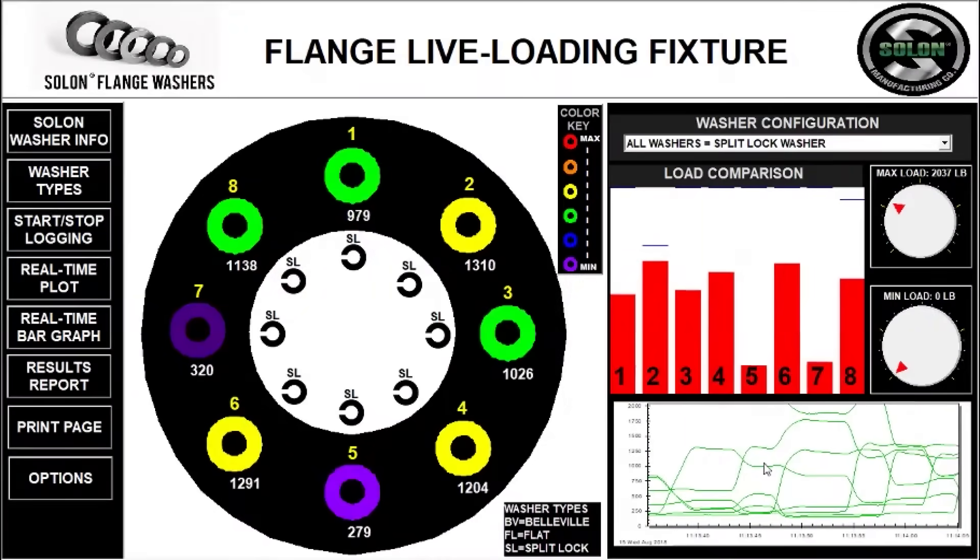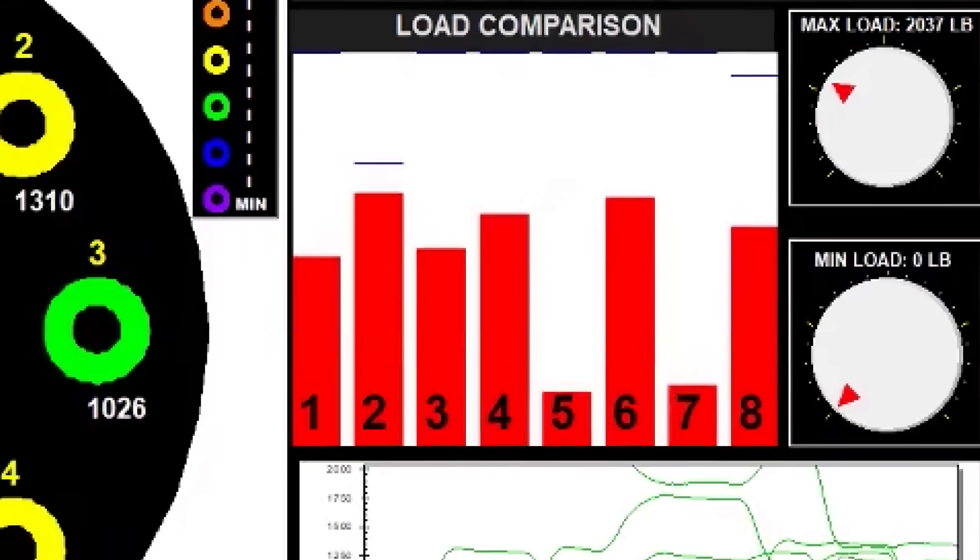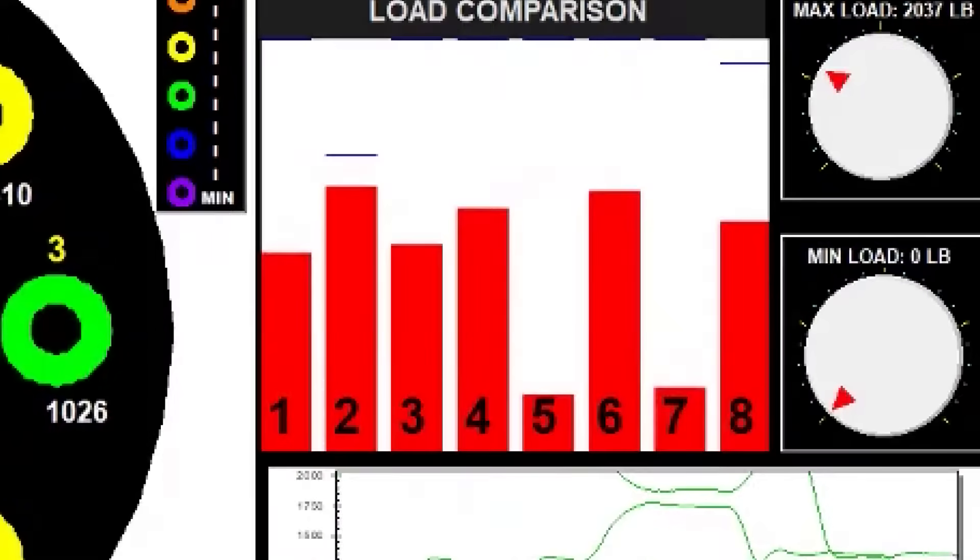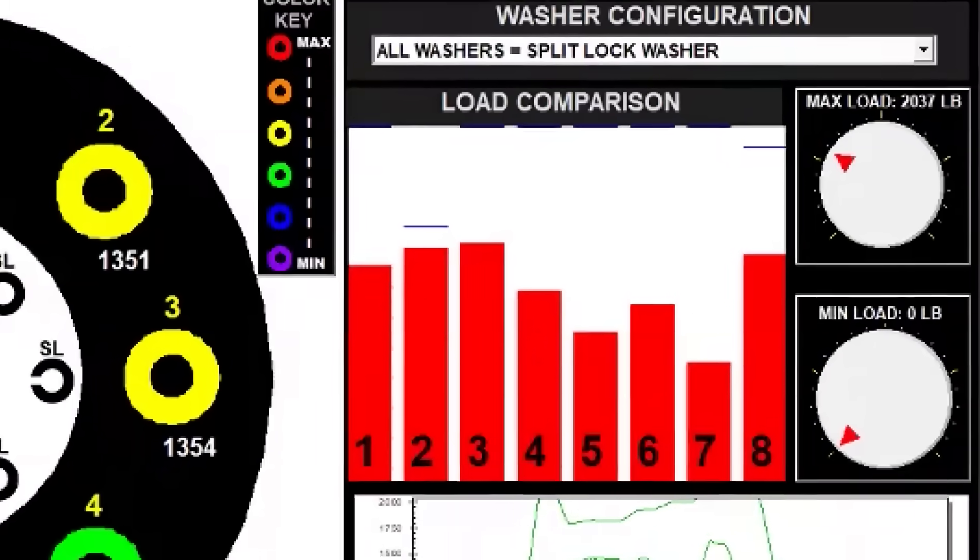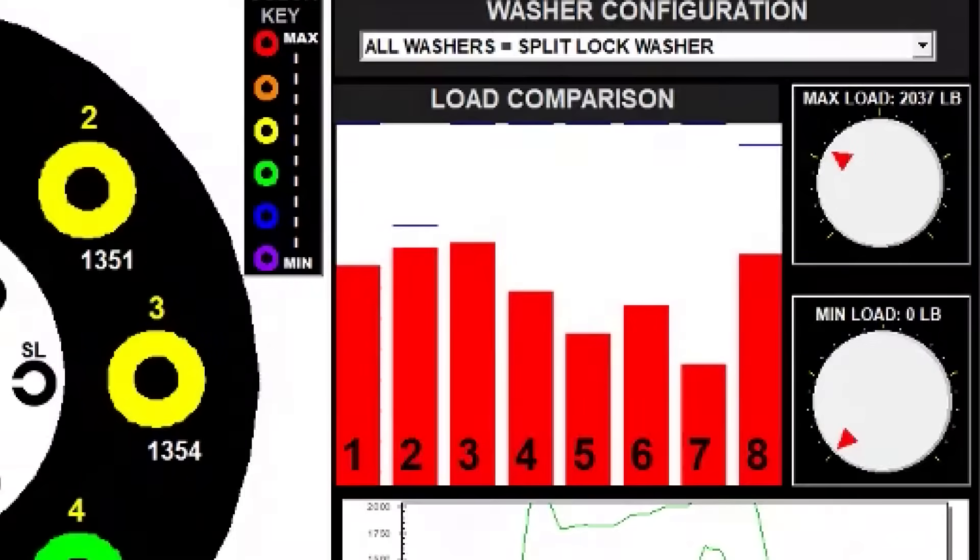As each bolt is tightened, the loads on the other bolts change. This is common and due to elastic interactions. After the final pass, freezing the video shows that there is a significant variation between bolt loads. This is known as bolt load scatter.